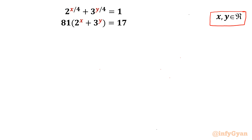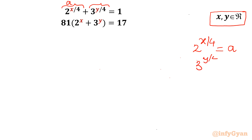Let's get started by writing substitutions straight away. I will consider 2^(x/4) = a, so the first term becomes a. Second substitution: I will consider 3^(y/4) = b, so that term becomes b. So equation 1 will become a + b = 1.